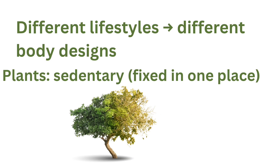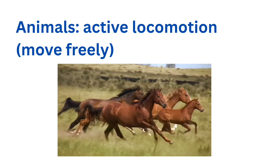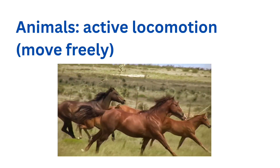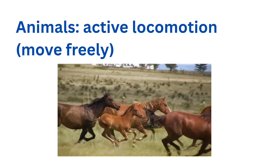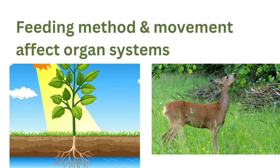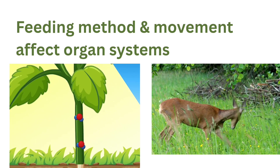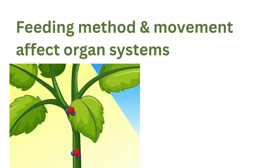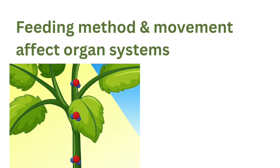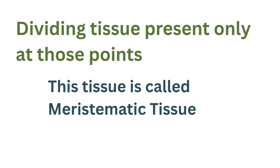Plants are sedentary — they remain fixed in one place — but animals can move freely, and this is called locomotion. Because of these differences in feeding methods and movement, the organ systems of plants and animals are designed in very different ways. The growth of plants occurs only in certain specific regions because dividing tissues are found only at those points, and these tissues are called meristematic tissues.